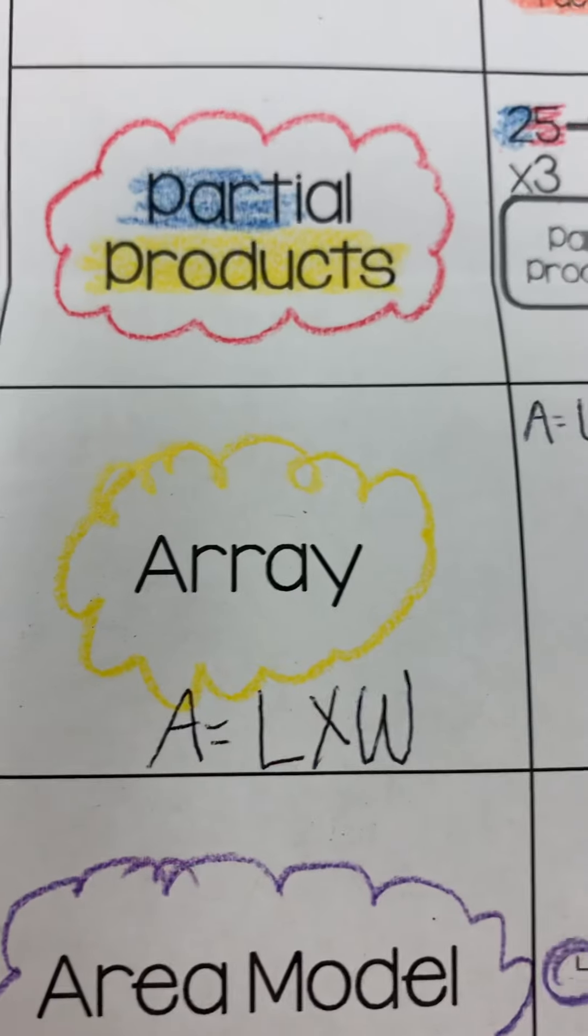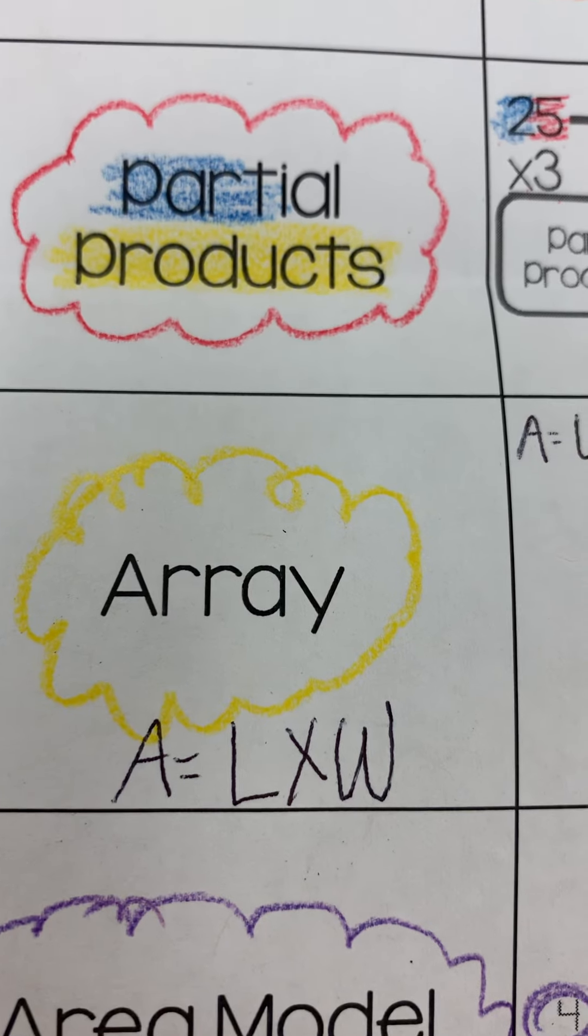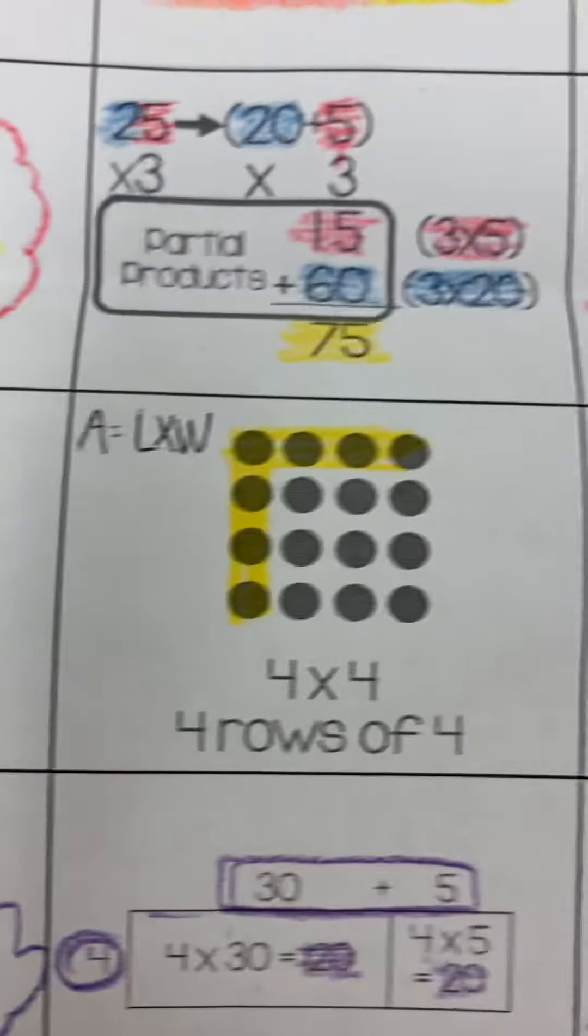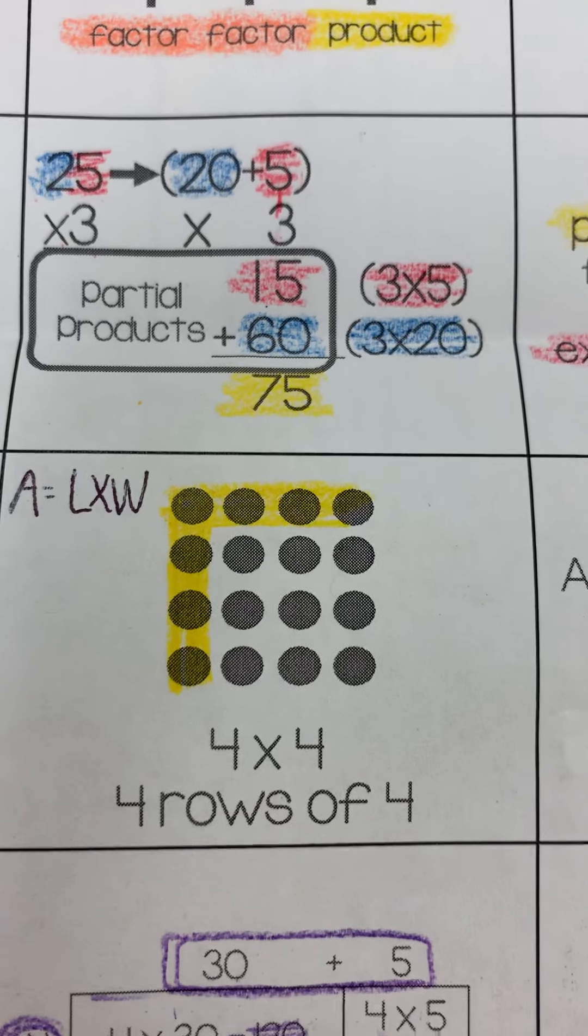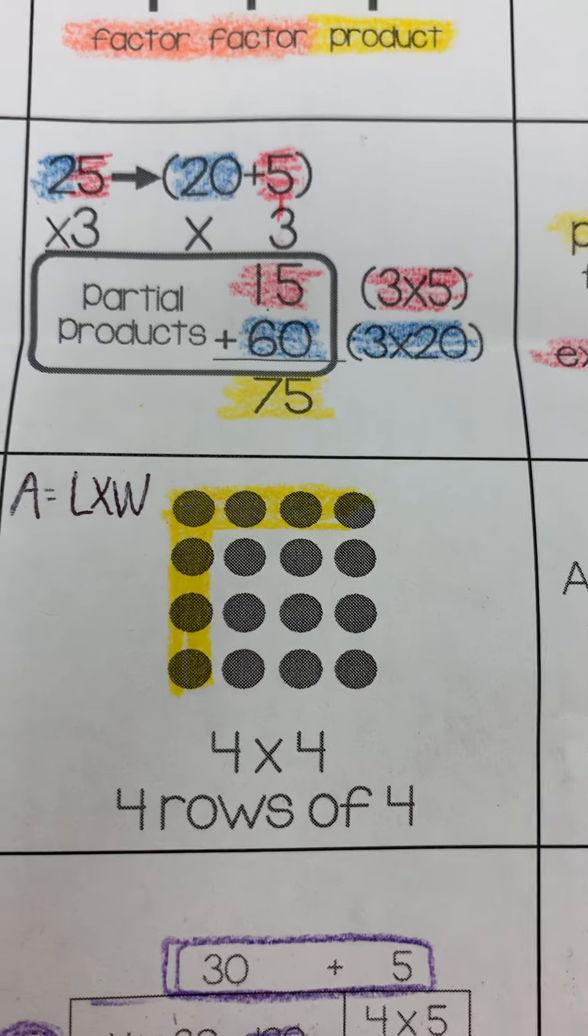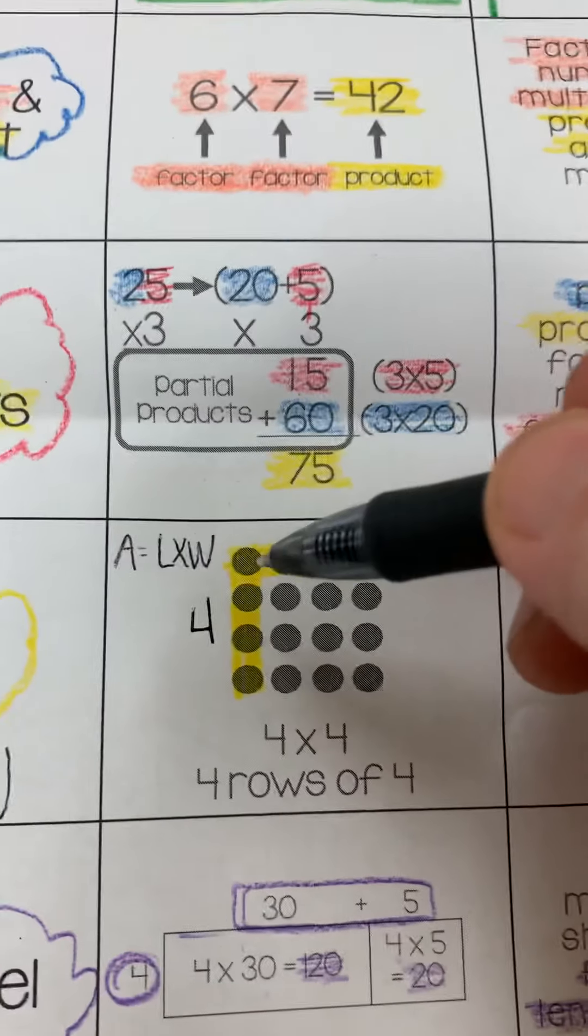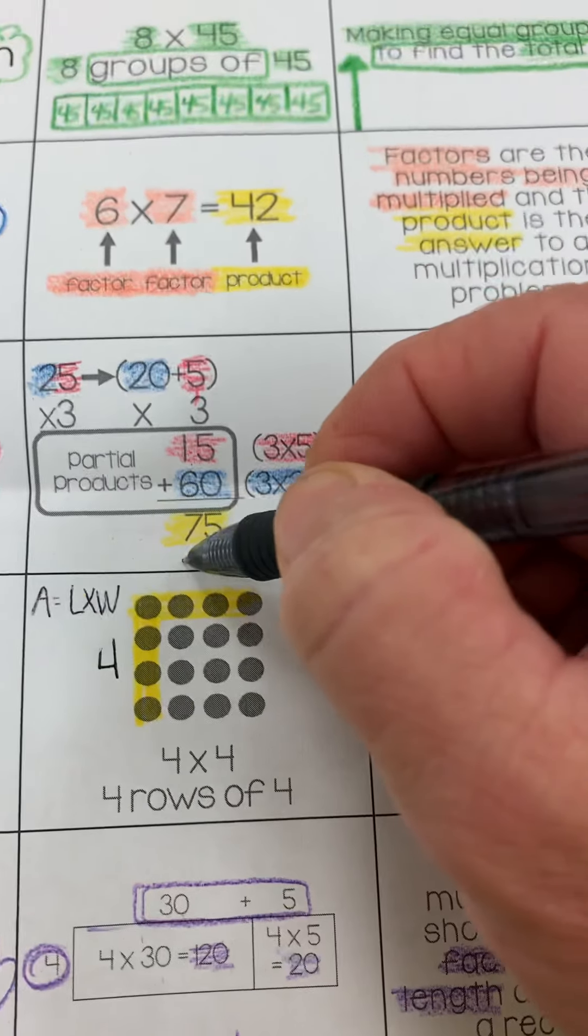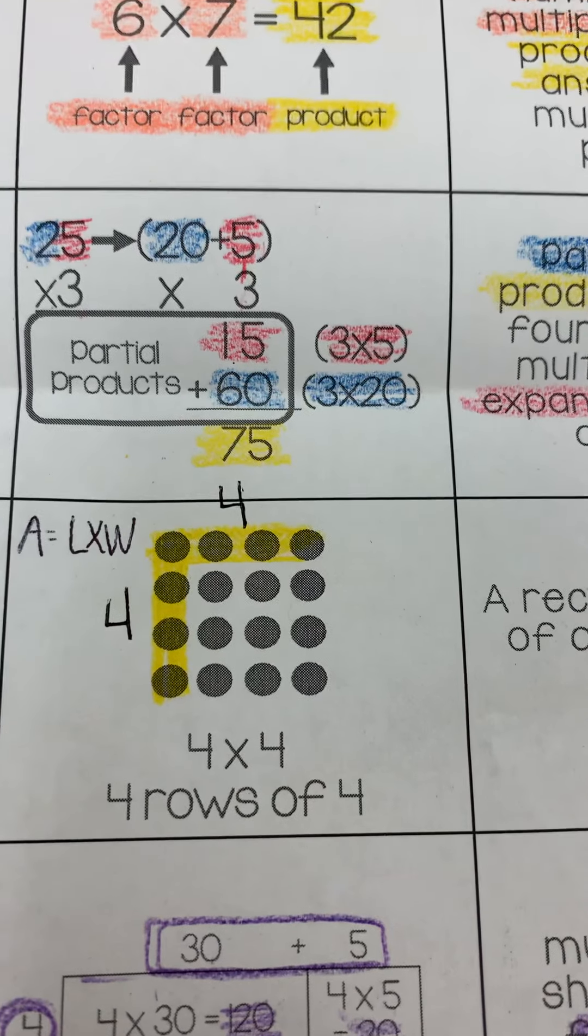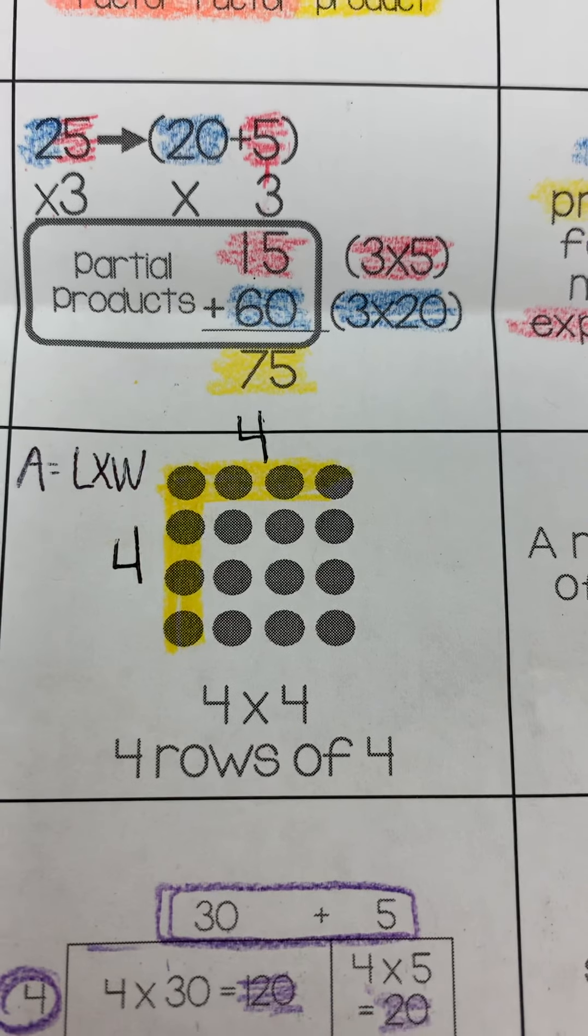And then the next one is an array. We wrote area model formula under array because an array is in the form of an area. An area equals length times width. So once again, we have 4 going down this way, and 4 across the top. That means this equation would be 4 rows of 4, or 4 times 4.